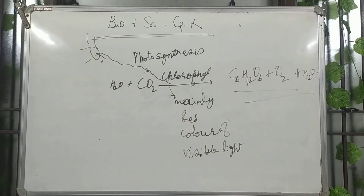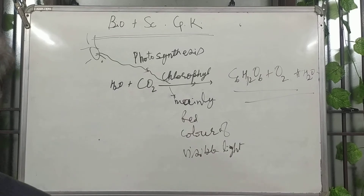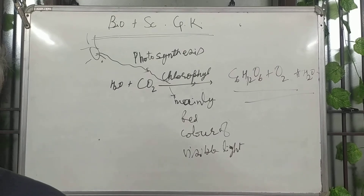Next question: what is not produced in my body? The options are vitamins, enzymes, protein, and calcium. The answer is vitamins. Vitamins are not produced by the body — they are nutrients and body-maintaining elements but not produced by the body.